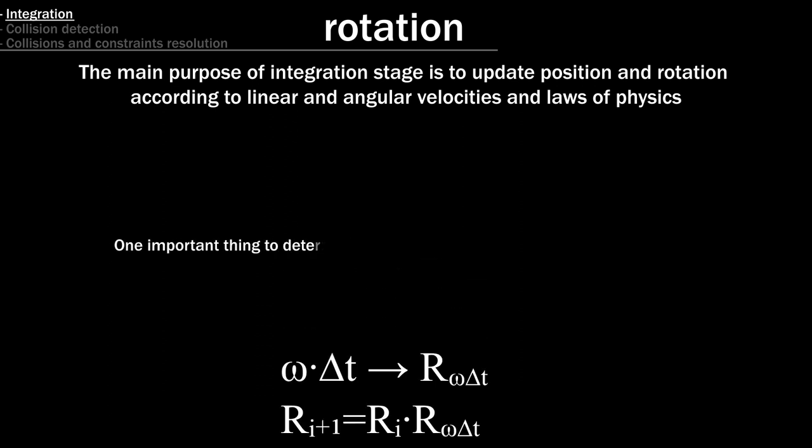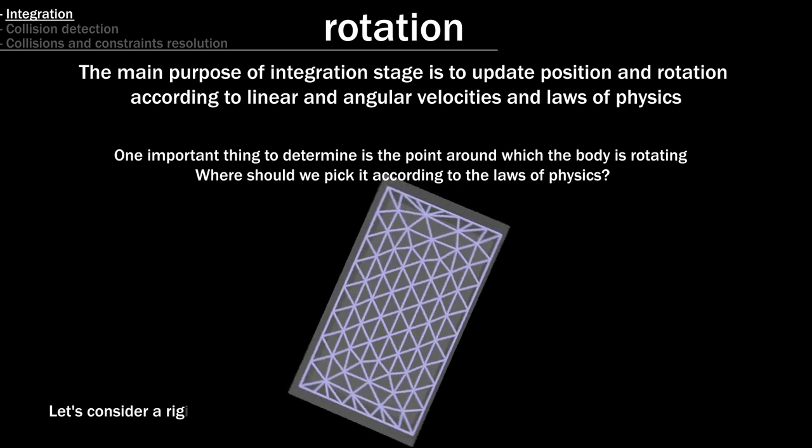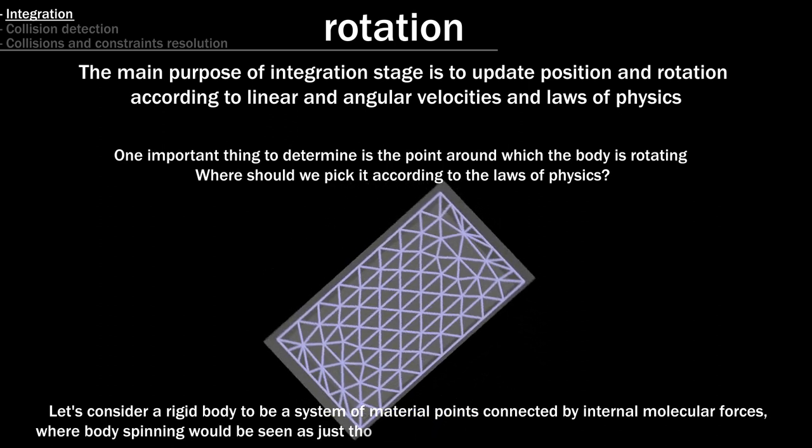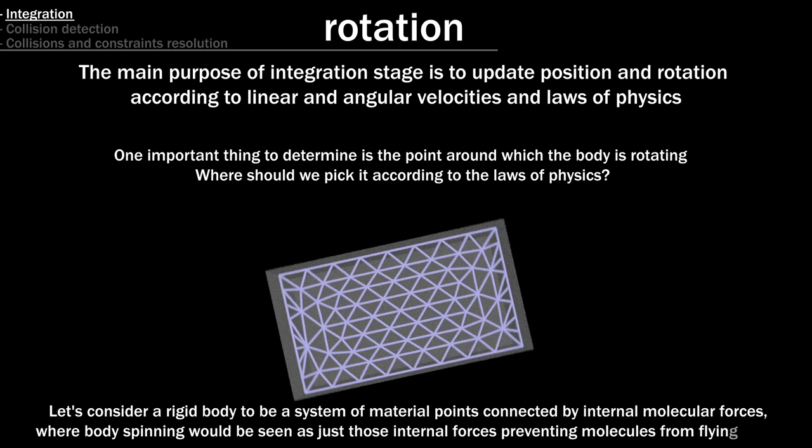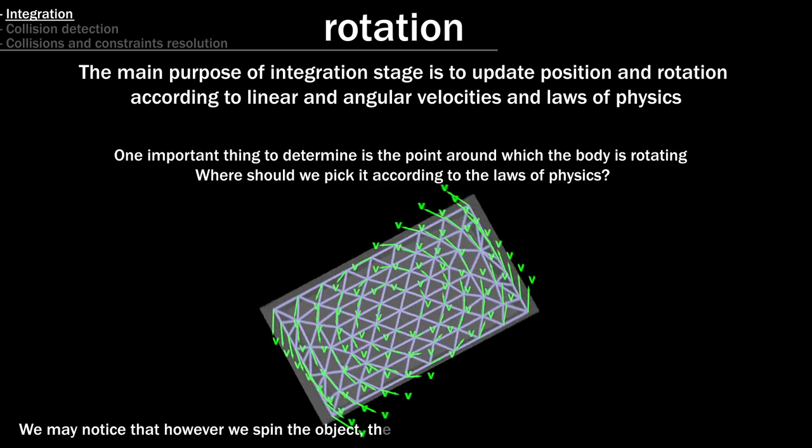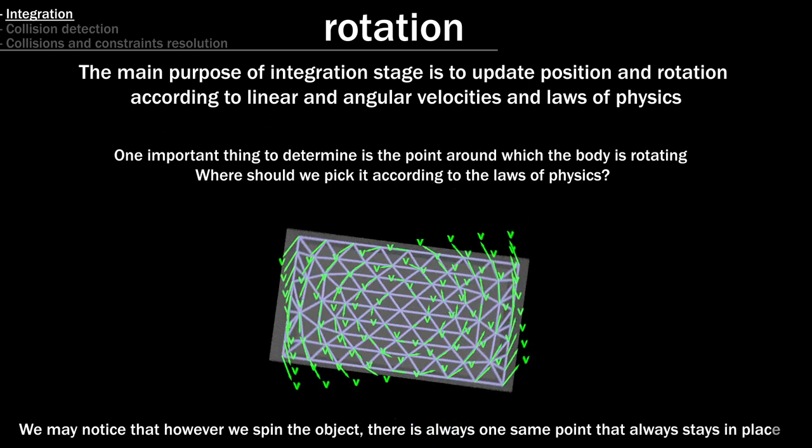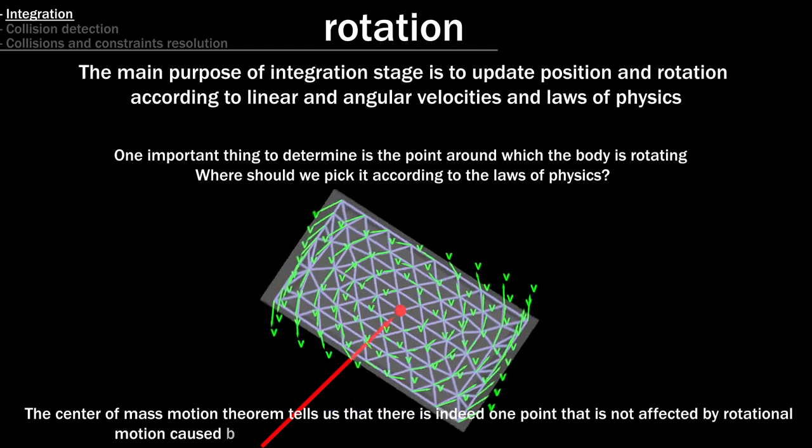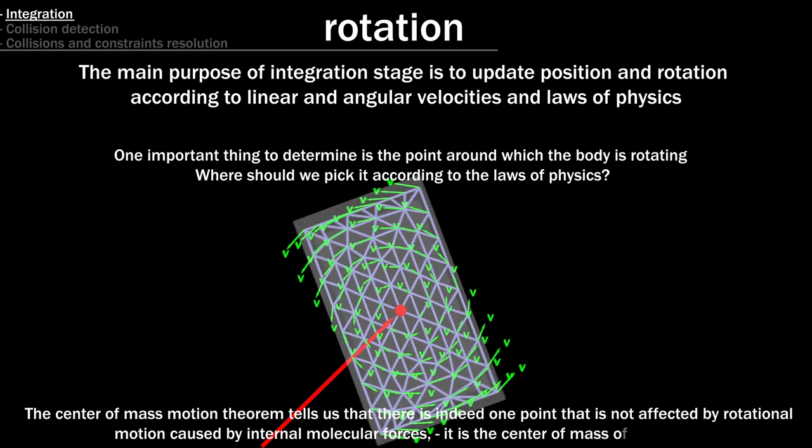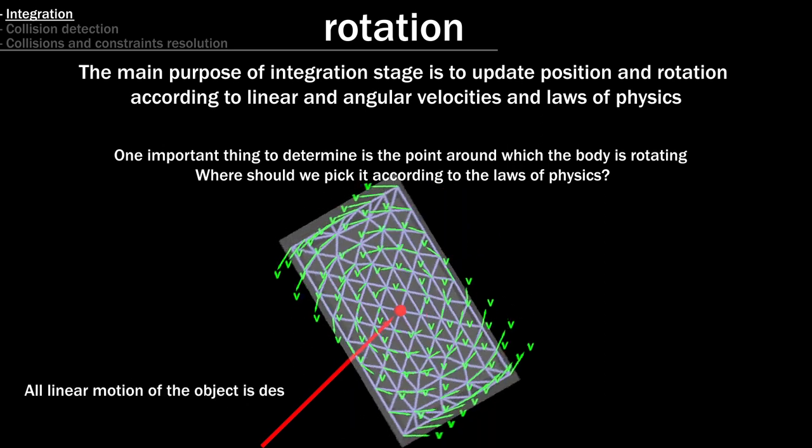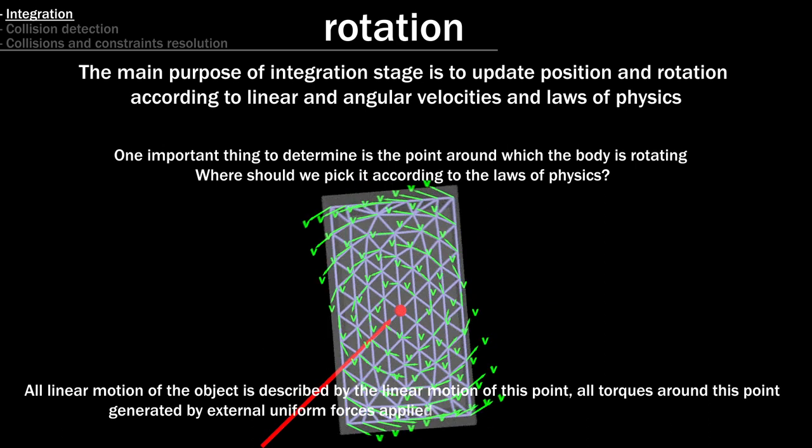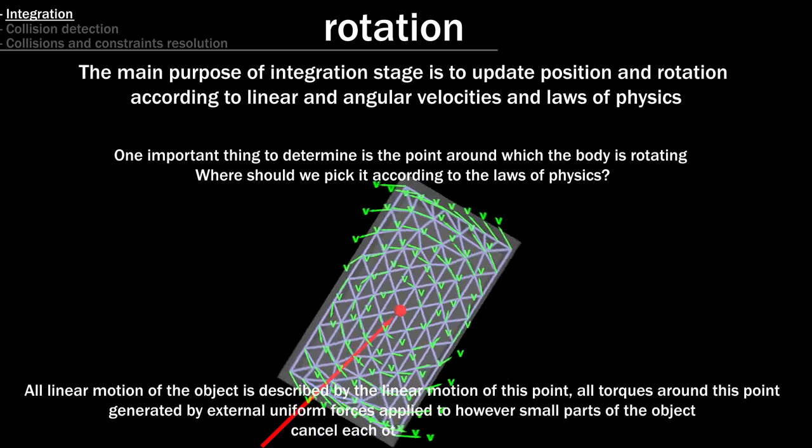One important thing to determine is the point around which the body is rotating, where should we pick it according to the laws of physics? Let's consider a rigid body to be a system of material points connected by internal molecular forces, where body spinning would be seen as just those internal forces preventing molecules from flying apart. We may notice that however we spin the object, there is always one same point that always stays in place. The center of mass motion theorem tells us that there is indeed one point that is not affected by rotational motion caused by internal molecular forces, it is the center of mass of the object.